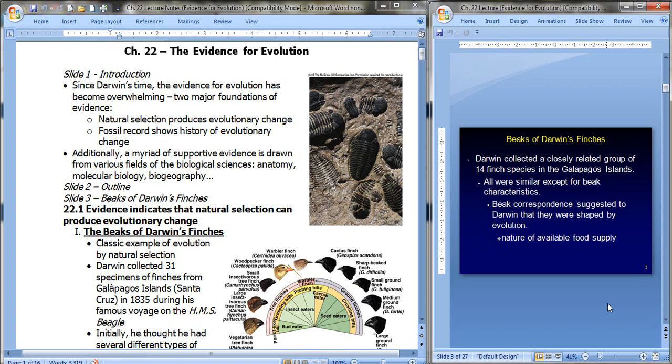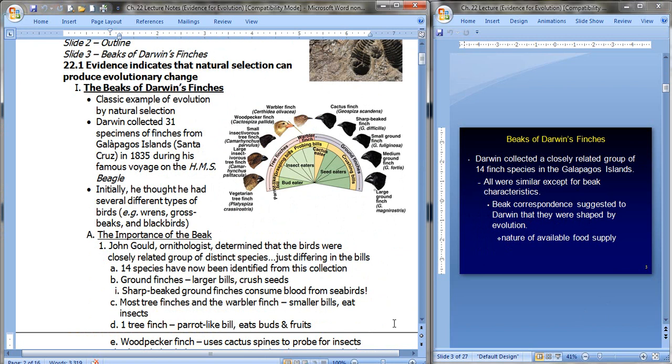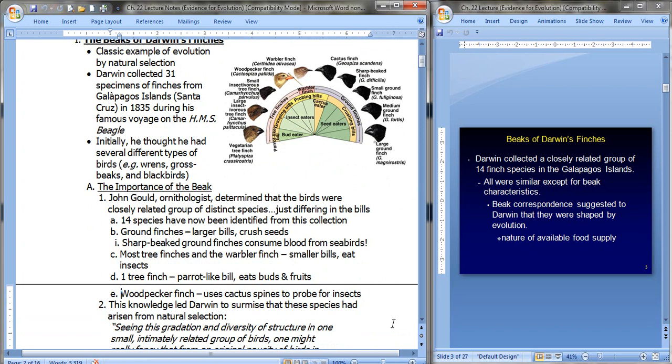So let's begin with the beaks of Darwin's finches. Quite a famous story, of course. This is just one of the most classic examples of evolution by the process of natural selection. When we say evolution by natural selection, make sure that you understand that evolution is basically the outcome, the change that we see, and natural selection is the process that got you there. While in the Galapagos in 1835, Darwin collected 31 specimens of finches, specifically on the Santa Cruz island. At first, he thought he just had different types of birds, maybe different species, like wrens, gross beaks, blackbirds. But then, he brought his specimens to John Gould, and you might remember watching the movie Darwin's Dangerous Idea in Biology, a very long British movie, where his specimens were observed by another scientist, an ornithologist to somebody who studies birds. And John Gould determined that these birds were basically a closely related group of distinct species, just differing in their bills, but otherwise the same.